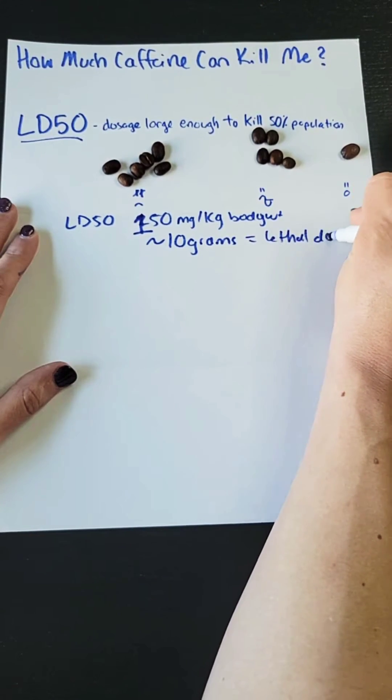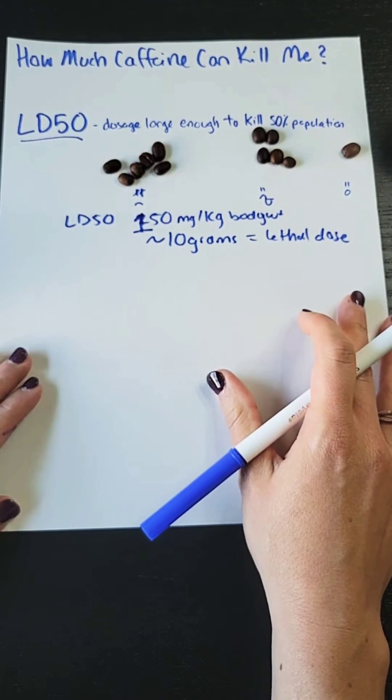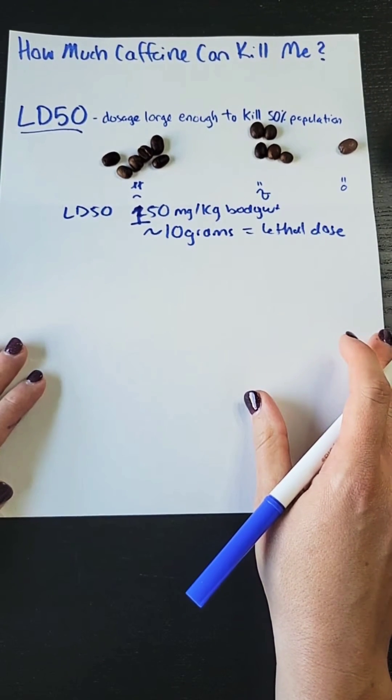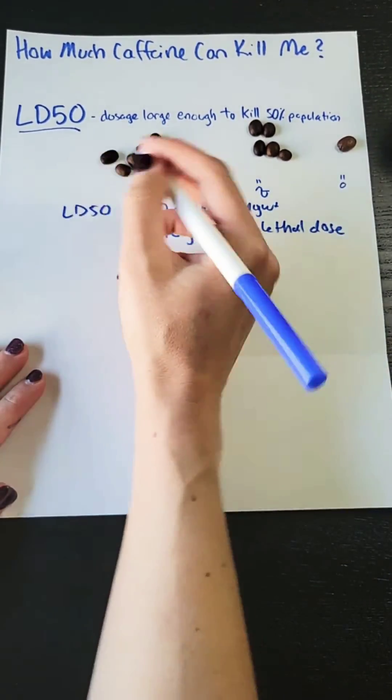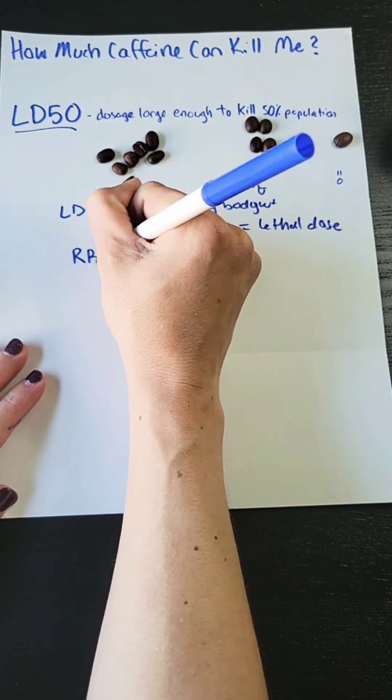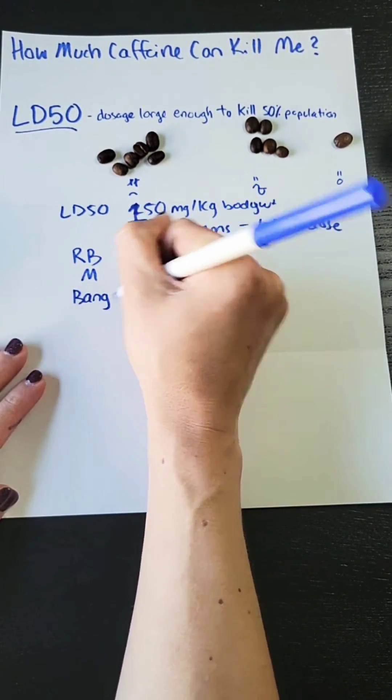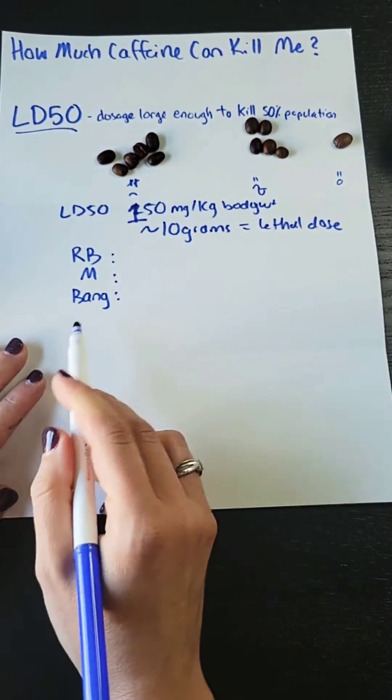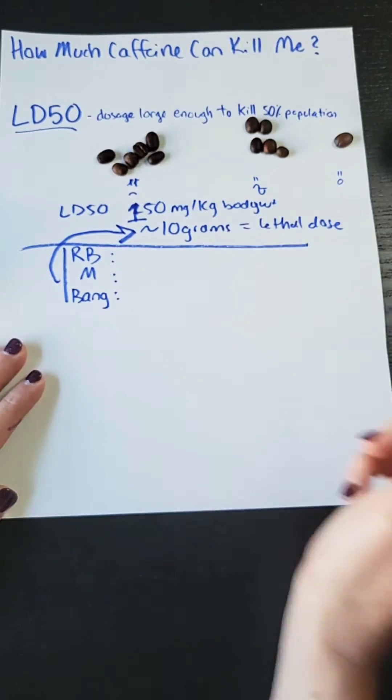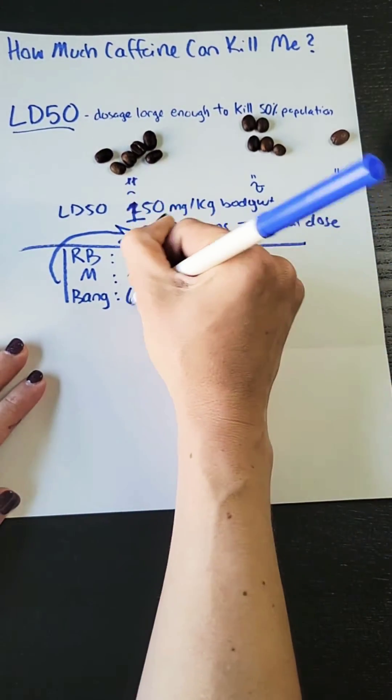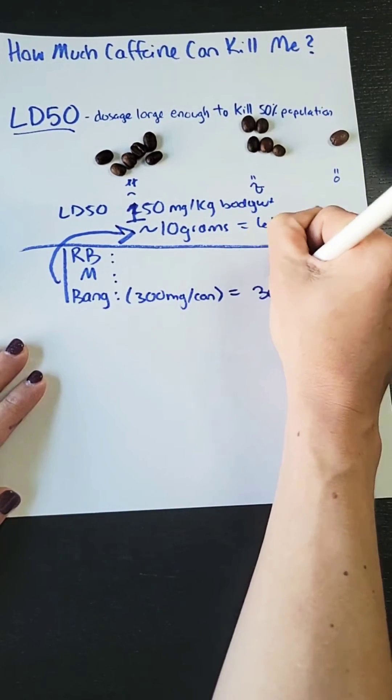What does that actually look like? Let's look at some popular beverages. Because energy drinks are so often criticized for being more lethal than coffee, let's look at the stereotypical energy drinks. I'm going to go with the big three, which is Red Bull, Monster, and Bang. How many cans would it take? Well with Bang, which has 300 milligrams per can, it takes around 30 cans.